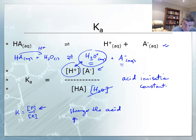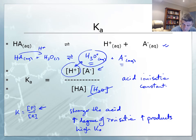the stronger the acid, the greater the degree of ionization, and that's another way of saying the greater the number of products, and therefore the higher the value of Ka.